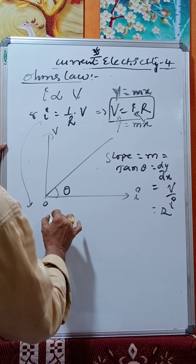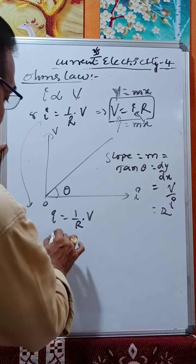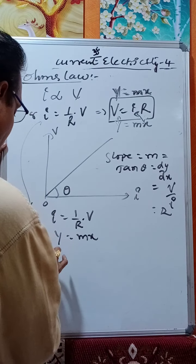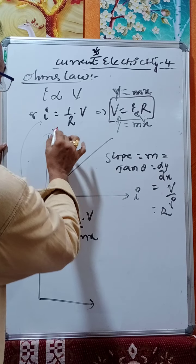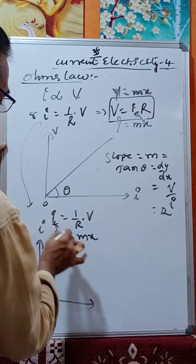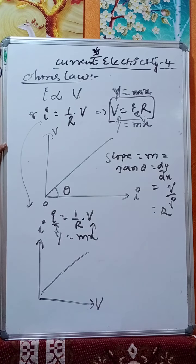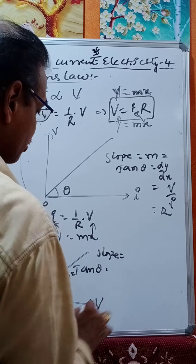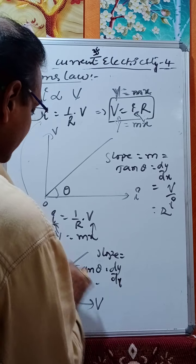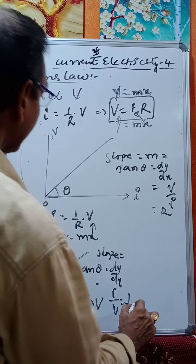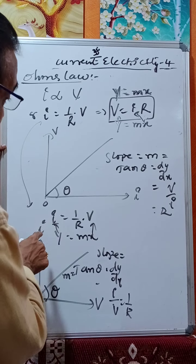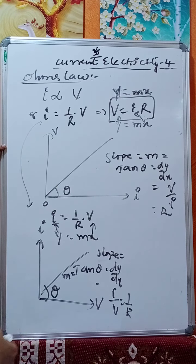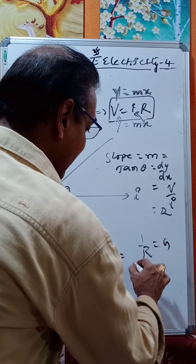Alternatively, I equals one over R times V is also in the form y equals mx. Plotting I on the y-axis and V on the x-axis, it is again a straight line through the origin. The slope equals dy/dx equals I/V, which equals one over R. So the slope of I versus V graph gives the reciprocal of resistance, which we call conductance.